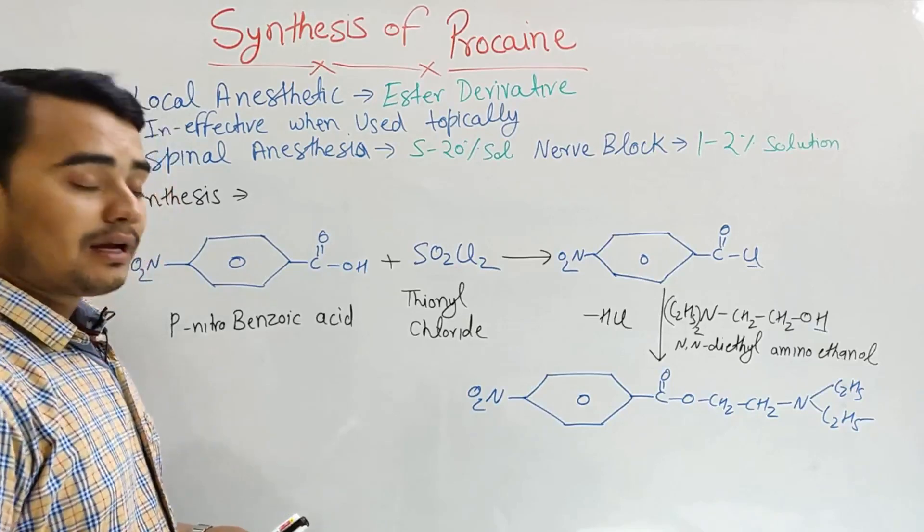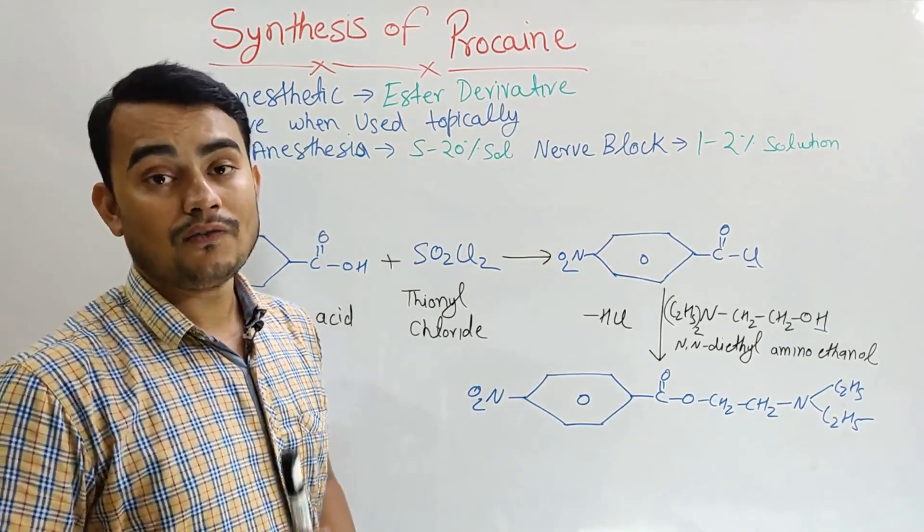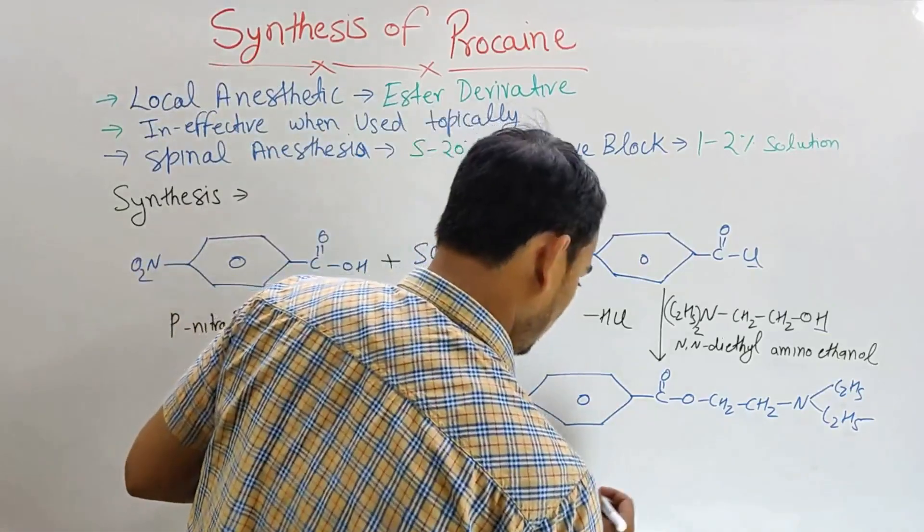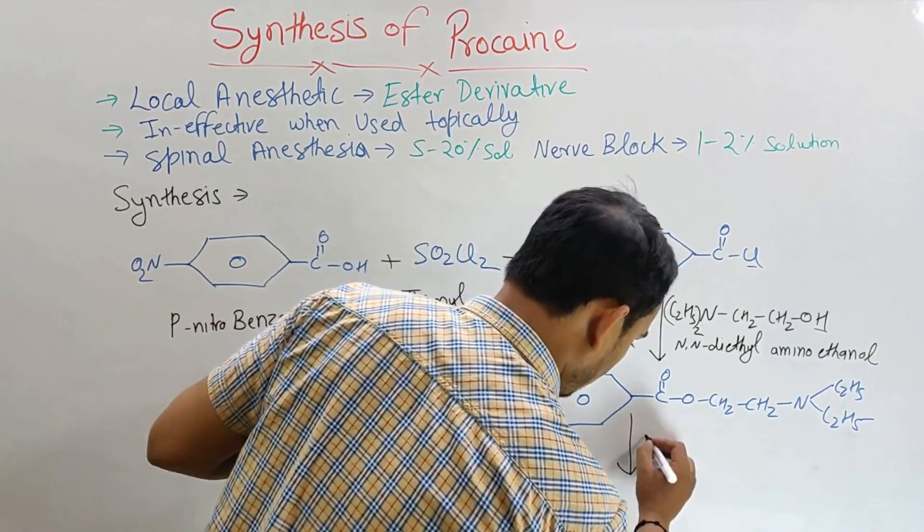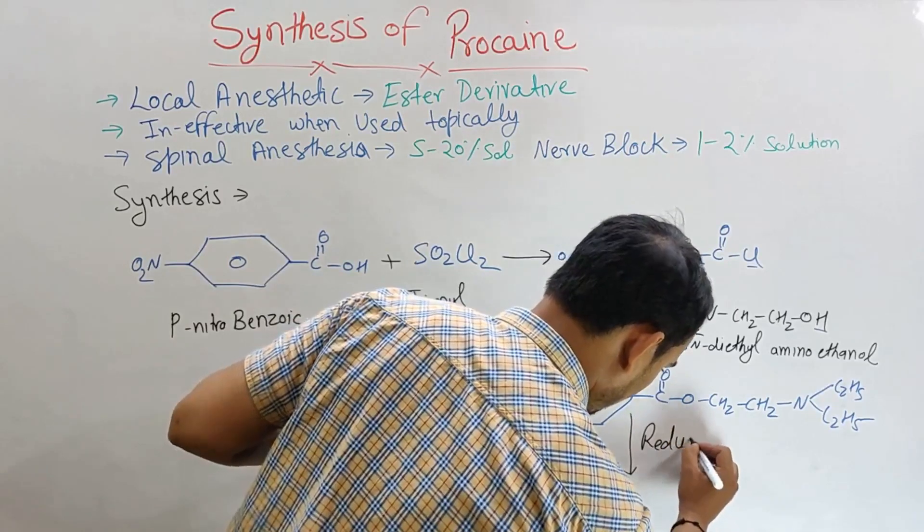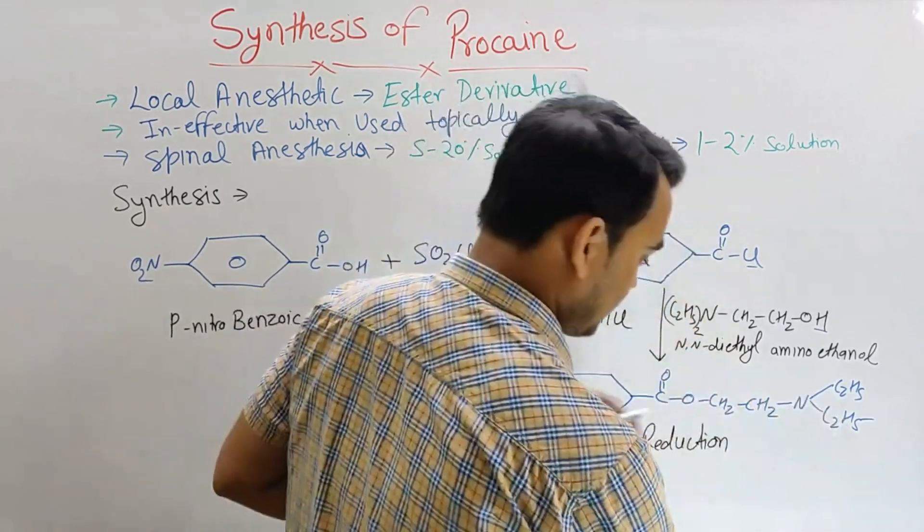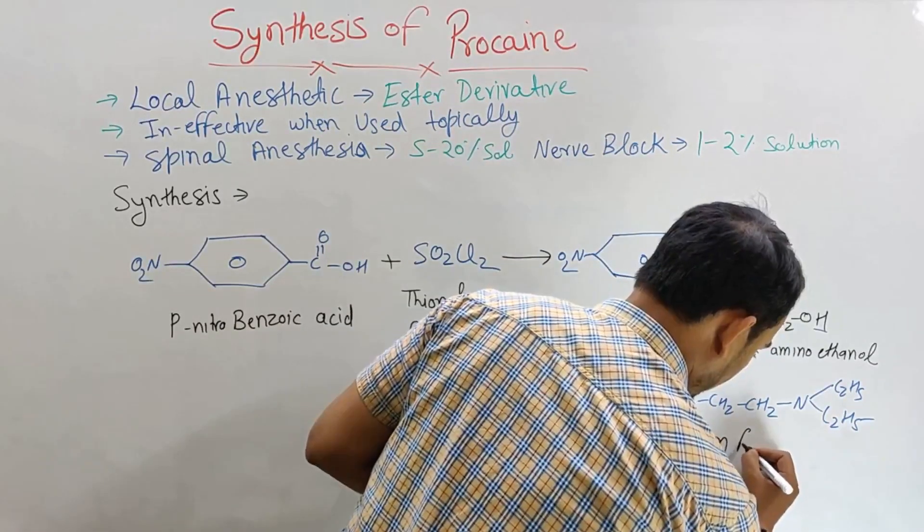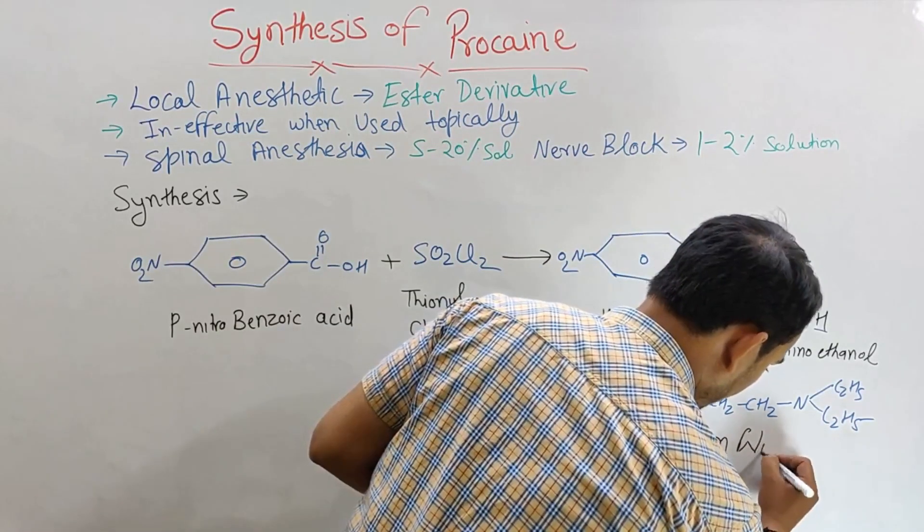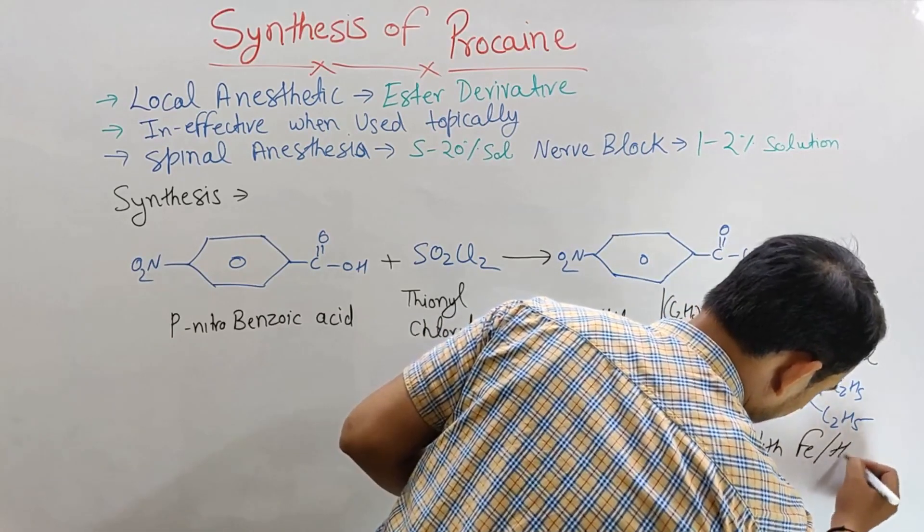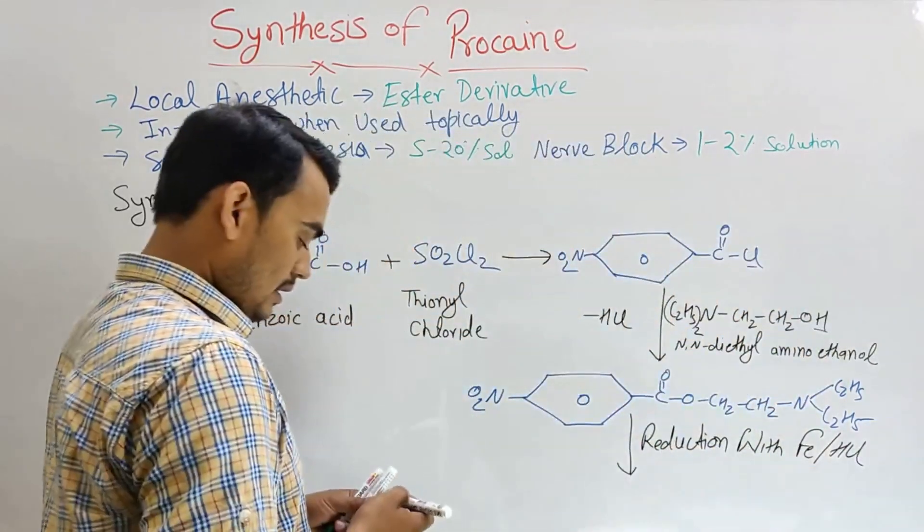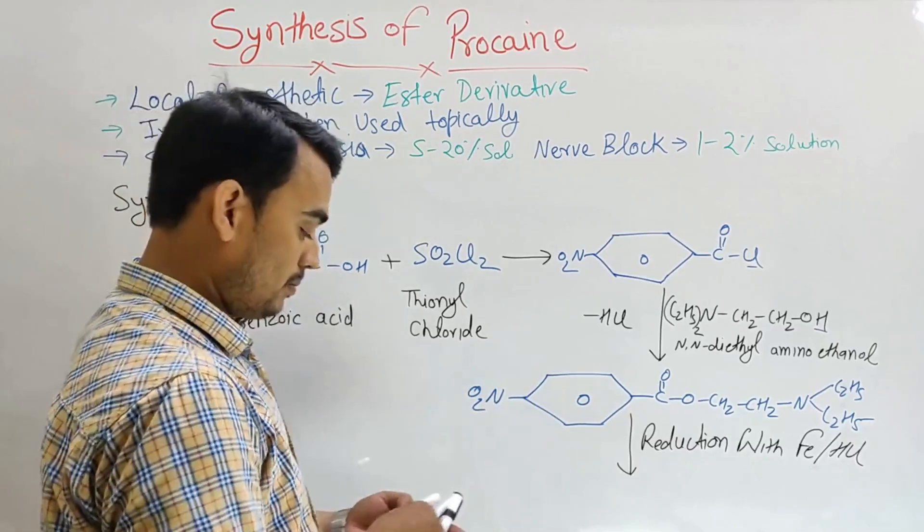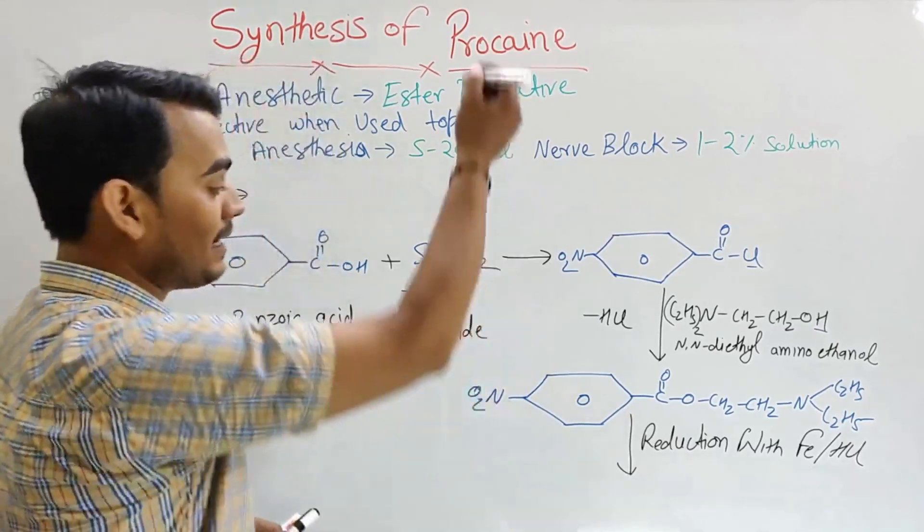Now this intermediate gets reduction in the presence of iron and HCl. Reduction with iron in the presence of HCl. Then this nitro group will change into the amino group, and that will be your final product that is procaine.